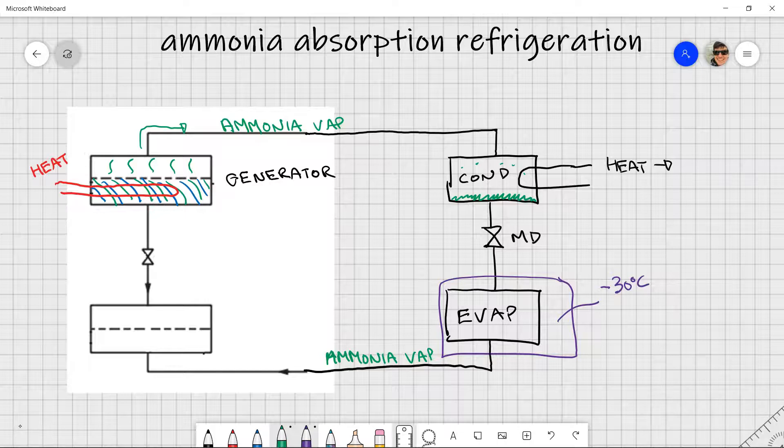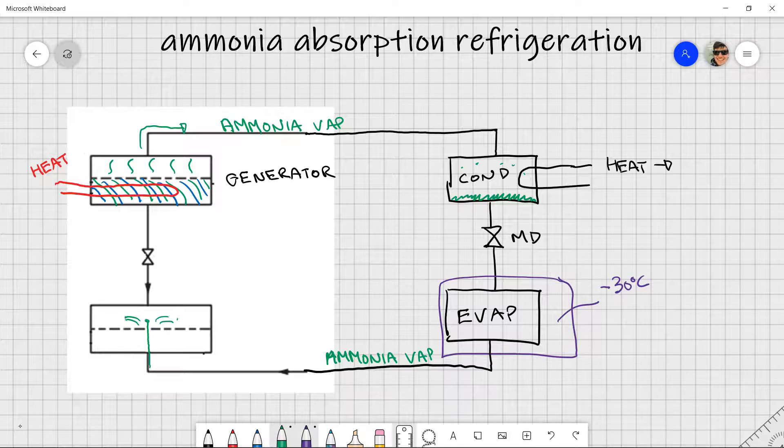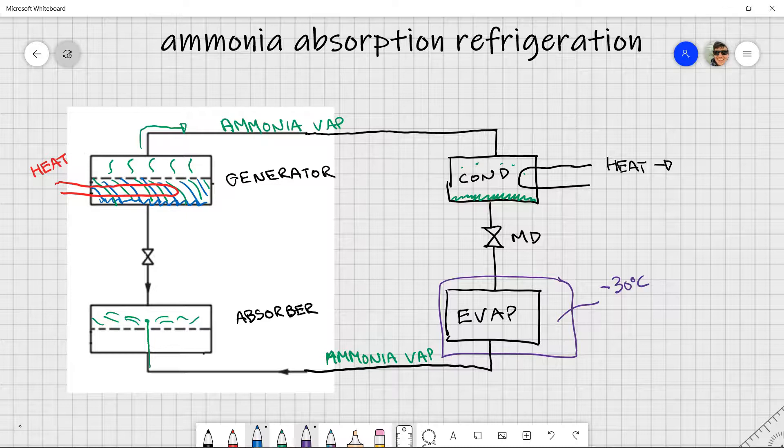So the ammonia that leaves the evaporator is going to come up, and I'm going to allow it to exit out and sort of make its way into this upper cavity. This vessel is known as the absorber. And we can imagine by the name what its function is. Its function is to absorb that ammonia into something, and what that something is is going to be water. Here's where we get the water from. When we drive off the ammonia out of the generator, what's left is mostly water. So we recycle that water downwards and put it into the absorber.